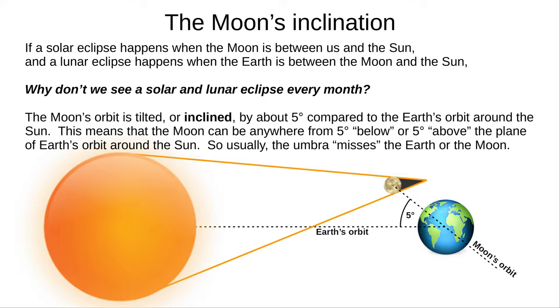The Earth has an orbital plane around the Sun, and the Moon has an orbital plane around the Earth. But these planes aren't in line with each other. The Moon's orbital plane is inclined, or tilted, about five degrees.